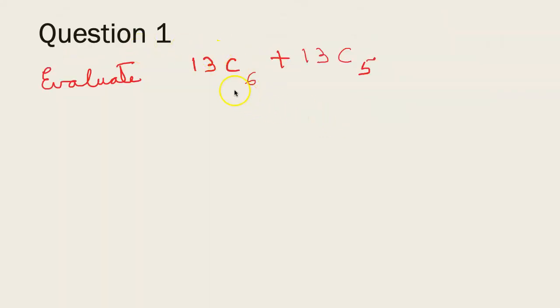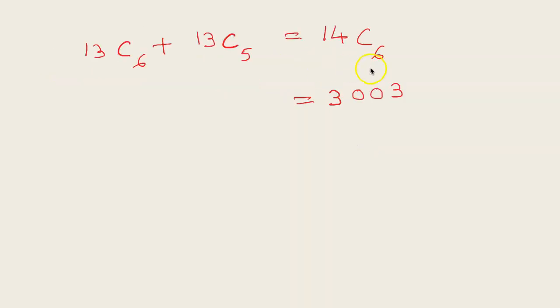So coming to questions, evaluate 13C6 + 13C5. This is of the form nCr + nC(r-1) which is (n+1)Cr. So I get 14C6 which is 3003.